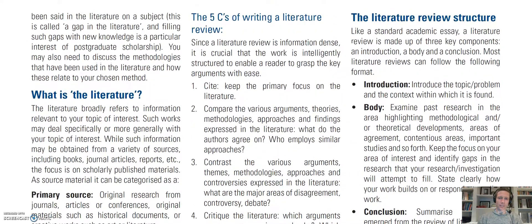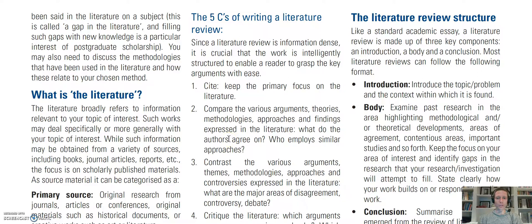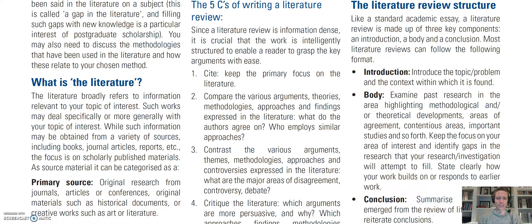The author here covers the five C's of writing a literature review. Number one: cite — keep the primary focus of your literature on citing these primary sources. Compare the various arguments, theories, methodologies, approaches, and findings. You can critique the studies: if they have a very small sample size and you think that's important, notate that. If there were some threats to validity where the results weren't accurate based upon some fallacies of the research design, then you might discuss that.